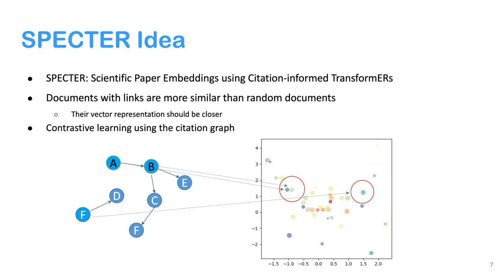The SPECTRE model — Scientific Paper Embeddings using Citation-Informed Transformer — is motivated by the idea that documents with citation links are more similar to each other than random documents. We implement this using a contrastive learning objective on the citation graph. In this tiny citation graph, nodes are papers and links are citations. Paper A citing paper B means they should be very close in representation space, and probably farther from something like paper F.